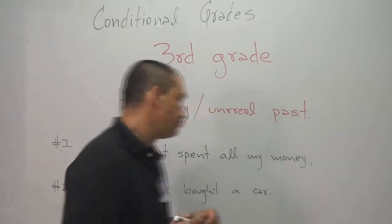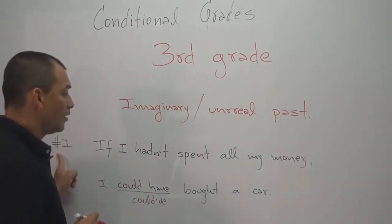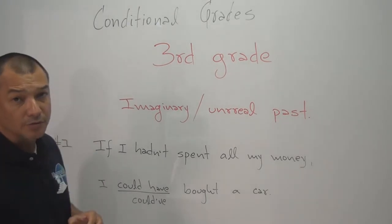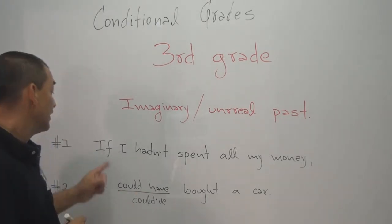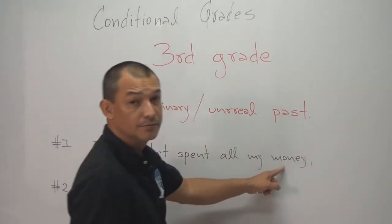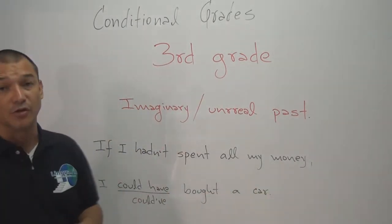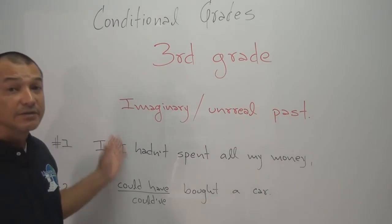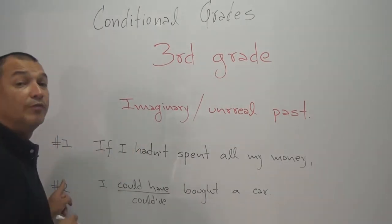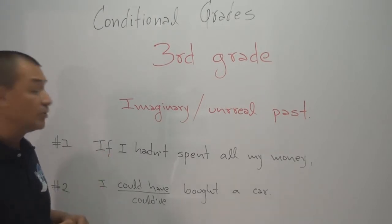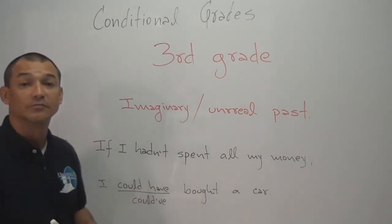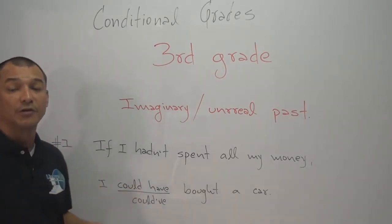Miremos entonces un primer ejemplo. Acción número uno, o primera cláusula — la cláusula condicional: 'If I hadn't spent all my money.' Si no me hubiese gastado, si no me hubiera gastado todo mi dinero. Acción número dos, o segunda cláusula: 'I could have bought a car.' Podría haber comprado un carro.